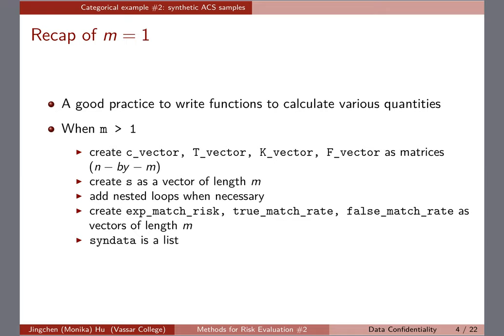Each element of s will be the number of unique matches in that particular synthetic dataset. You may want to add nested loops where necessary. The expected match risk, true match rate, and false match rate should now be vectors as well — they were all scalars when m equals one. Also, remember that in the Bayesian synthesis models lectures, sim data was created as a list when m is greater than one, so that's why in the demo sim data is treated as a list.